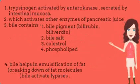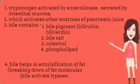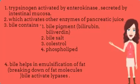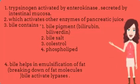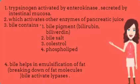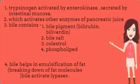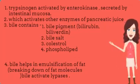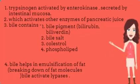Trypsinogen is activated by enterokinase into trypsin, which is secreted by intestinal mucosa. Trypsin then activates other enzymes of pancreatic juice. Bile is also secreted into the small intestine and contains: 1. Bile pigments like bilirubin and biliverdin, 2. Bile salts, 3. Cholesterol, 4. Phospholipids. Bile helps in breaking down fat molecules and also activates lipases.